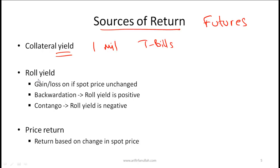Another source of yield is called roll yield. To make this easy, first memorize these three points: roll yield is the gain or loss if the spot price remains unchanged. If the spot price remains unchanged and the market is in backwardation, then roll yield is positive. If the market is in contango, then roll yield is negative. From an exam perspective, knowing this is sufficient.